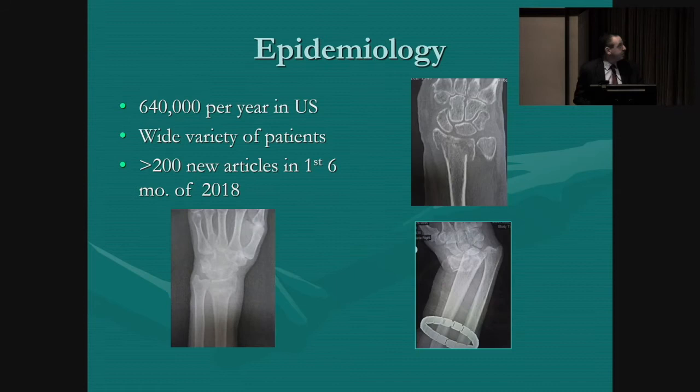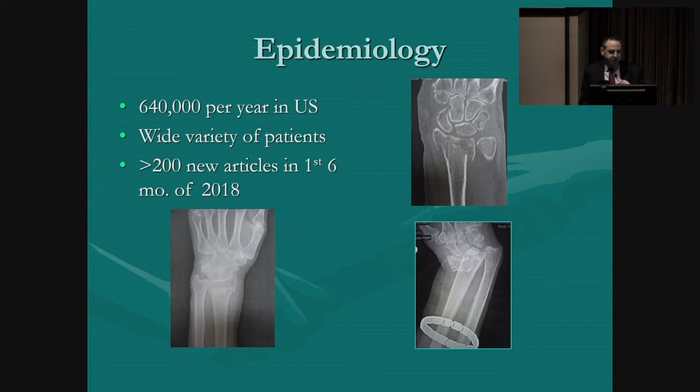The epidemiology: there are about 650,000 fractures of the distal radius in the United States each year. They happen to a wide variety of patients with all manner of intercurrent illnesses, and the literature can be kind of overwhelming. In the first half of 2018, there were over 200 new scholarly articles on the topic.